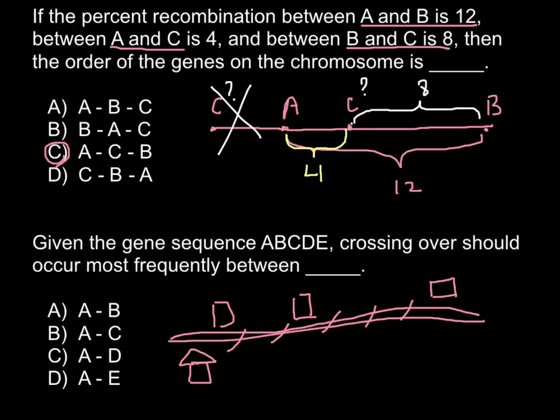Or genes that are very close to each other wouldn't have any crossing over at all. This is the explanation. As you see, A and E would have more chances for crossing over.